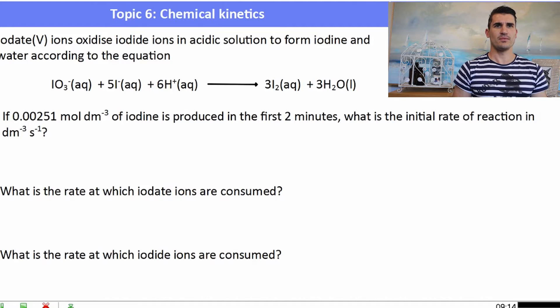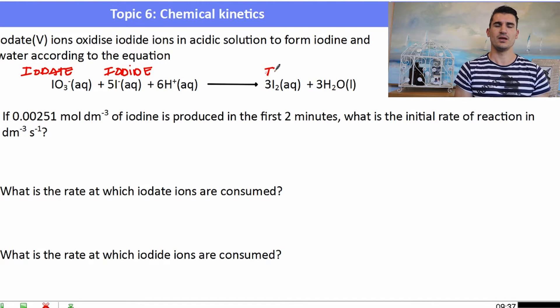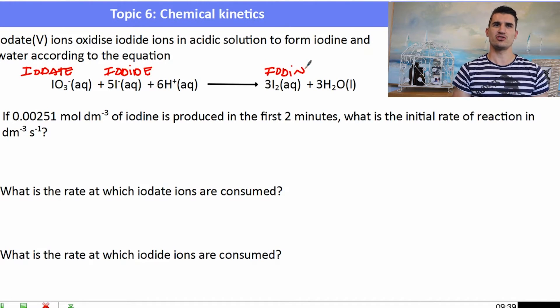The final example. Iodate ions oxidize iodide ions to form iodine according to the equation below. IO3- is the iodate. I- is the iodide and I2 is iodine. So the first thing you needed to do for this question was be able to work out which thing is which and then it's also a good idea to write them at the top. If a certain concentration of iodine is produced in the first two minutes, what is the initial rate of reaction in mole per decimetre cubed per second? So we're working with iodine first and they told us the concentration and they told us a time but in the wrong units.